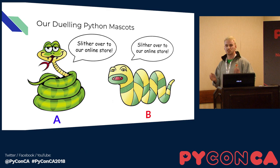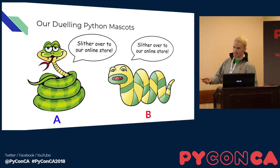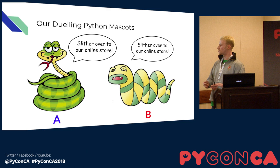To begin, I'll jump into a simple example. Let's say that I have an online store and I use Python banner ads to direct traffic to it. I'm currently using the one on the left, which tells people to slither over to my online store, but one day my design team comes up with a new design which they insist is better. We'll run an A/B test of the click rates of both ads and see which one performs better. For the experiment, we'll serve each variant of the ad to a thousand people each and compare which one has the best click rate.